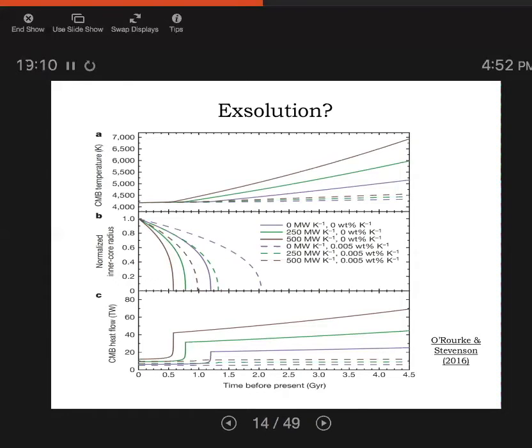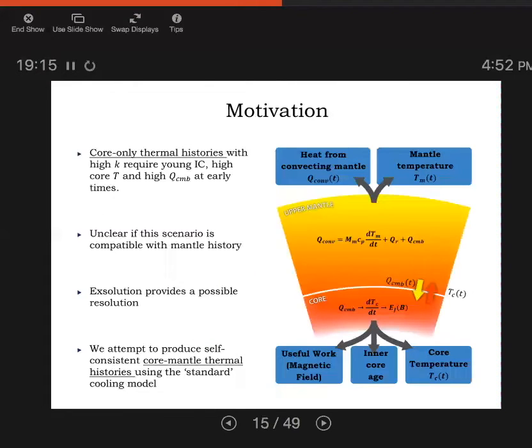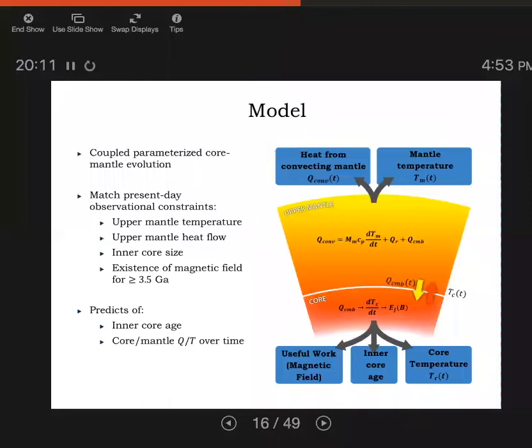So that's sort of my attempt to summarize how things have gone. What we said is that when you just consider the core now, and you invoke these high core conductivities that have come out of the mineral physics community, you find that your thermal history for the core predicts that the inner core is young, and the core started off hot, and you needed a lot of heat to maintain the dynamo. And so exsolution and such things were proposed as a possible resolution. In a sense, we didn't want to throw away the classical model that seems to have worked fine for the last 50 years quite just yet. And we thought, can we try and produce a self-consistent evolution for the mantle and the core without things like exsolution? So what we're going to try and do is take the model of the core that I just described and couple it to a model of the evolution of the mantle.